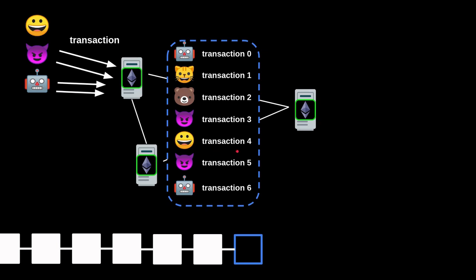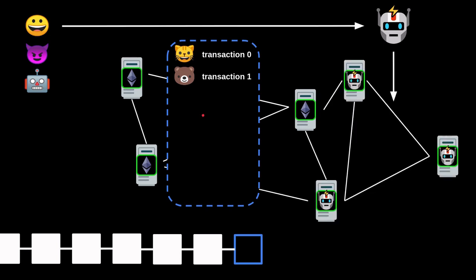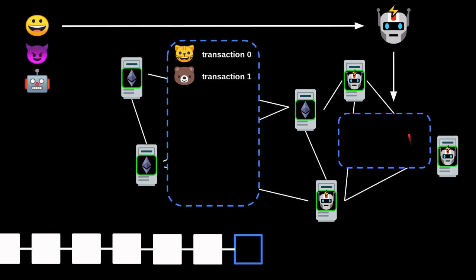Using Flashbots, how can Alice protect herself from sandwich attacks? Instead of sending her transaction to the Ethereum network, Alice sends her transaction to the Flashbots relayer. Flashbots relays her transaction to a set of miners that are running Flashbots. These miners also have a mempool where pending transactions are stored. However, unlike the Ethereum mempool — which is public, so anyone can see all of the pending transactions — the mempool of Flashbots is private.